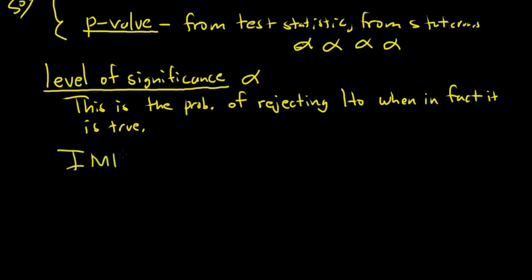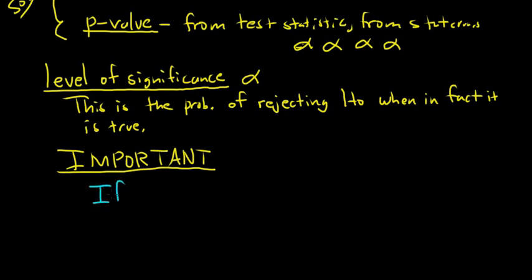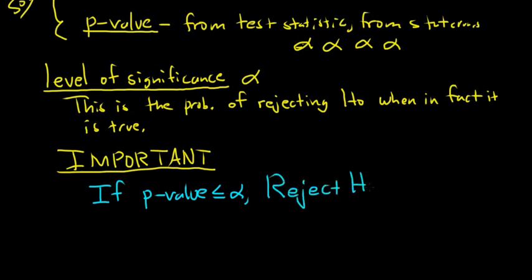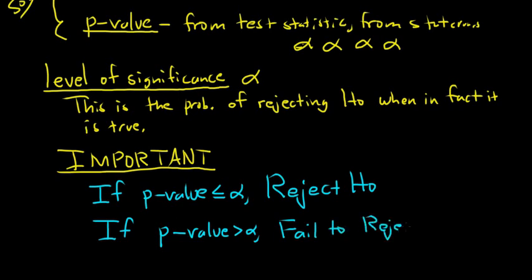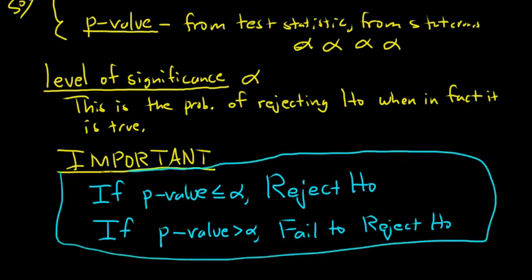This next part is really important. At some point in your test you have to make a decision. If your p-value is less than or equal to alpha, you reject H0. If your p-value is bigger than alpha, you fail to reject H0. The language is very important — it's 'fail to reject,' not 'accept.' Small p-value: reject. Bigger p-value: fail to reject. It's worth memorizing — it becomes easy after you do a bunch of these.